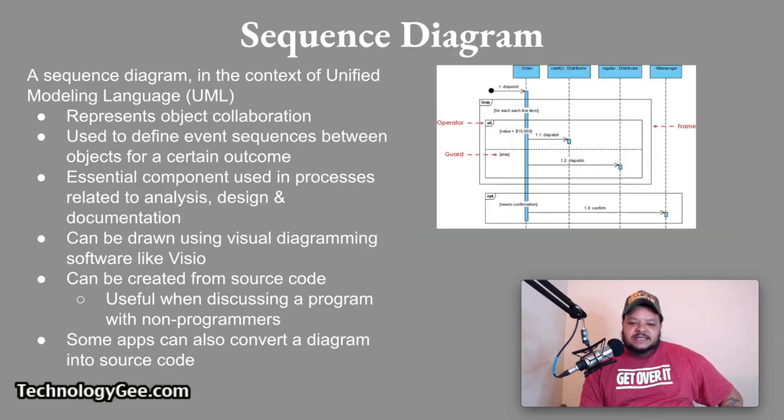Let's talk about sequence diagram. A sequence diagram in the context of Unified Modeling Language or UML represents object collaboration and is used to define event sequences between objects for a certain outcome. A sequence diagram is an essential component used in processes related to analysis, design, and documentation. A sequence diagram can be drawn using visual diagramming software like Visio. Creating a sequence diagram from source code can be useful when discussing a program with non-programmers. Some apps can also convert a diagram into source code. So that is an example of what a sequence diagram looks like.